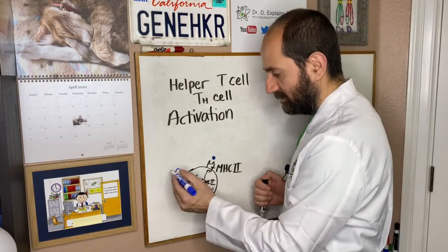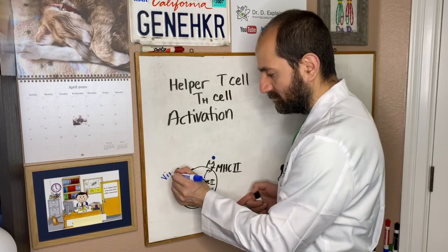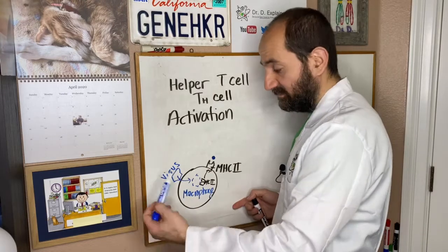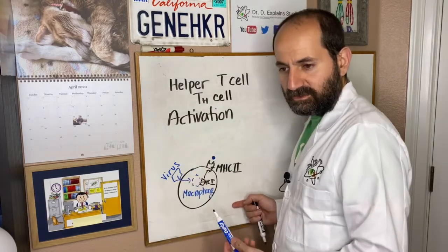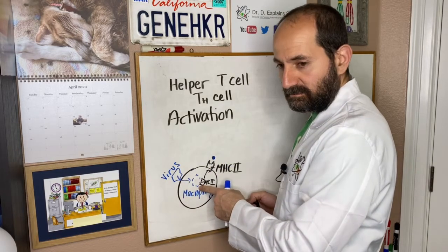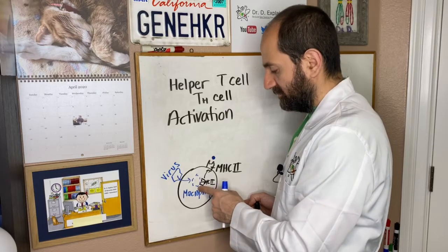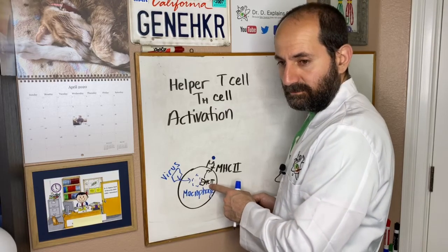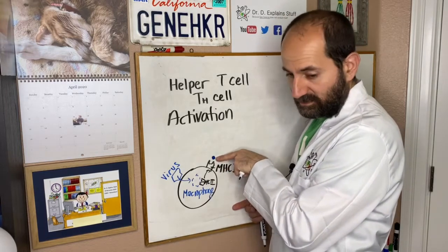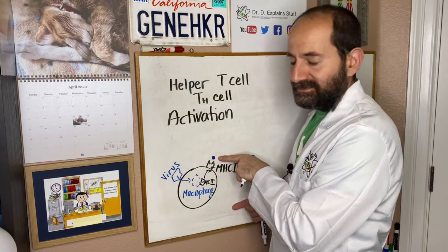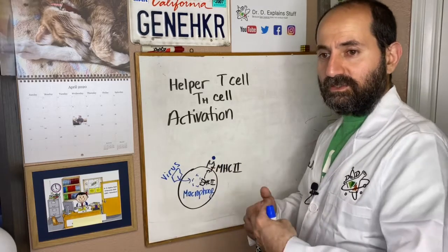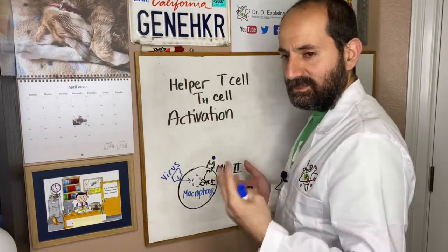So again, a virus was either phagocytosed by the macrophage or infected it — it doesn't matter, it got into the macrophage somehow. That virus gets chopped up, each part is called the antigen. Part of it gets conjugated with MHC2, and MHC2 presents that antigen — a part of that virus — to the outside. Because that's what MHC2 is: it's like a trophy case. It presents things to the outside world.